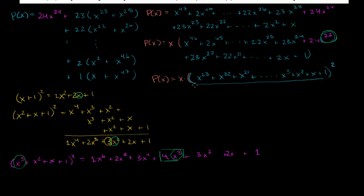I've done it in other videos — there is a way to find the sum of a finite geometric series. We'll use a similar technique right here to simplify this a little bit and help us find the roots. So let's call this whole thing s, equal to x to the 23 plus x to the 22nd plus all the way down to x plus 1.